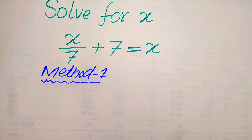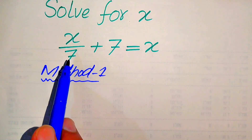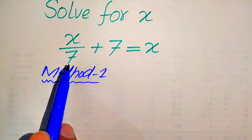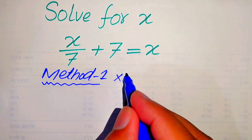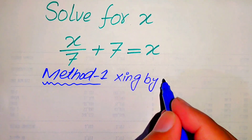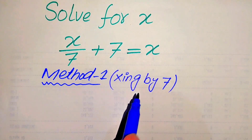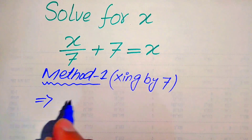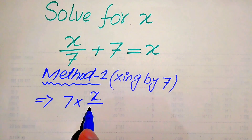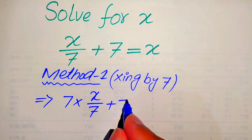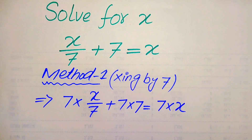The very first thing we are going to do is remove this fraction. In order to remove this fraction we will multiply both sides of the given equation by 7, so it will be written as 7 multiplied by x over 7 plus 7 multiplied by 7 equals 7 multiplied by x.